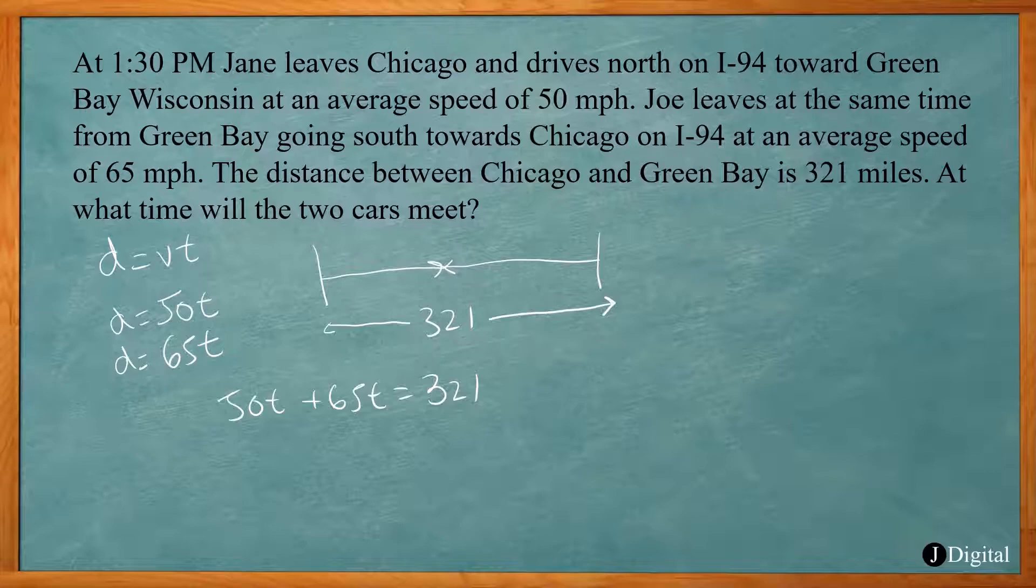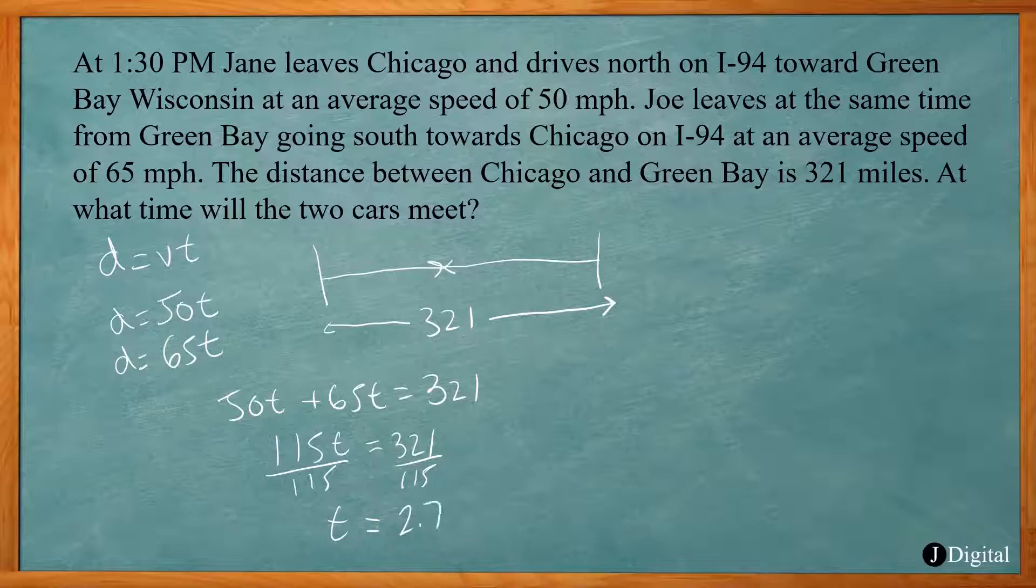If we solve for t, that will tell us how long it took. 50 plus 65 is 115, so 115t equals 321. Divide both sides by 115, and t is going to equal 2.79. That's going to be 2.79 hours.